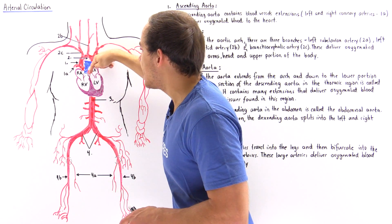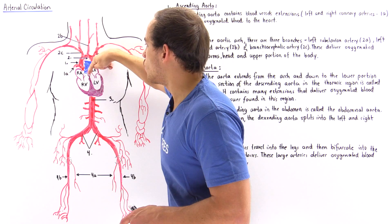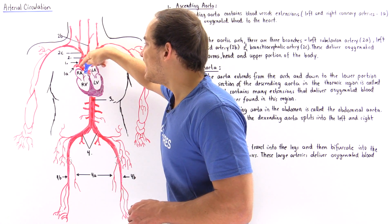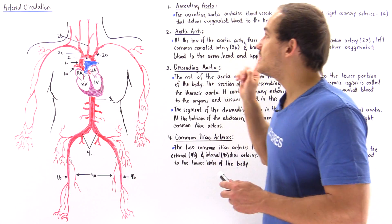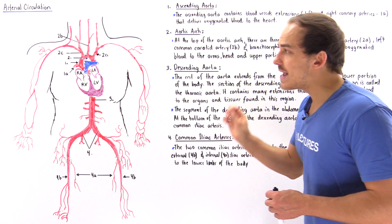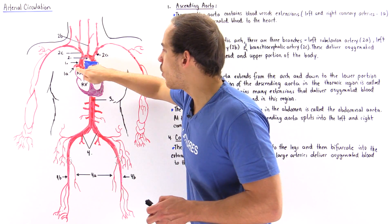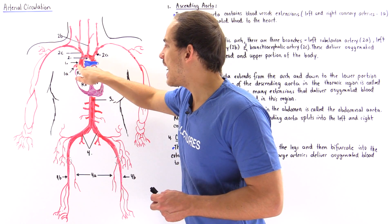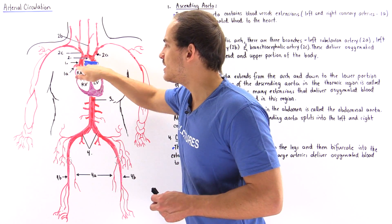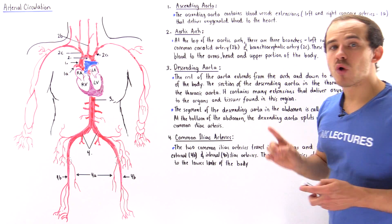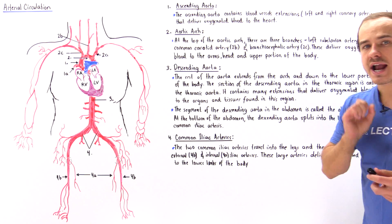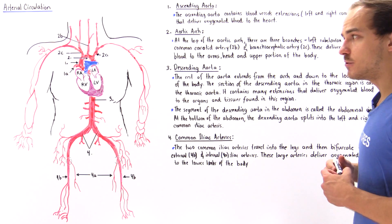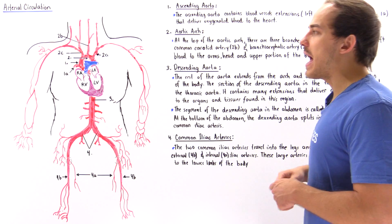The ascending aorta is shown in red as it travels to this location. At the beginning portion of our ascending aorta, branching takes place and we form two smaller arteries: the left and the right coronary arteries. These bring oxygenated and nutrient-filled blood to the cells of our heart.